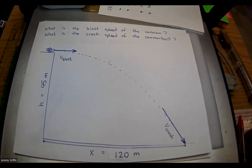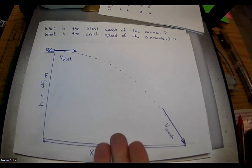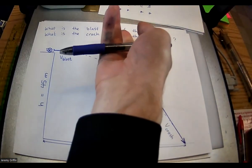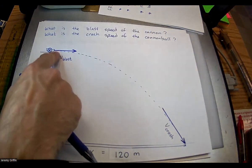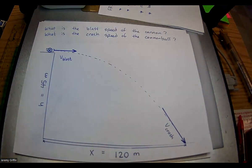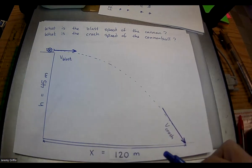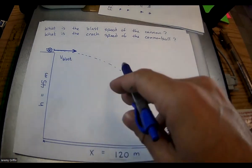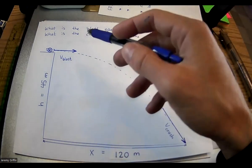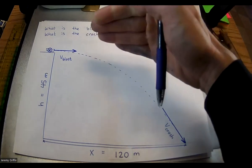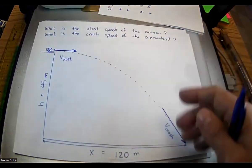Here's what we do. I'm going to walk you through how to solve this setup. We'll do this pair of questions — what's the blast speed and what's the crash speed? Hopefully I'll be able to plant some ideas so that when we get more in depth with this next week, you'll say, 'Oh yeah, I've seen this, I remember kind of how this works.' We're going to split this into strictly vertical motion and strictly horizontal motion.